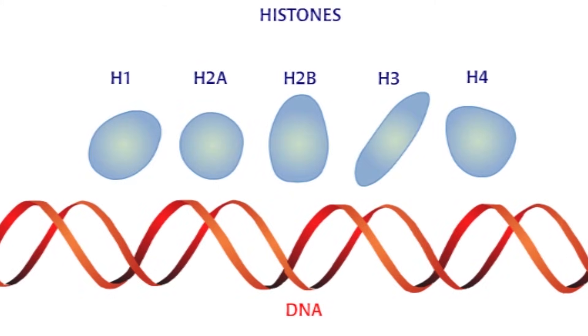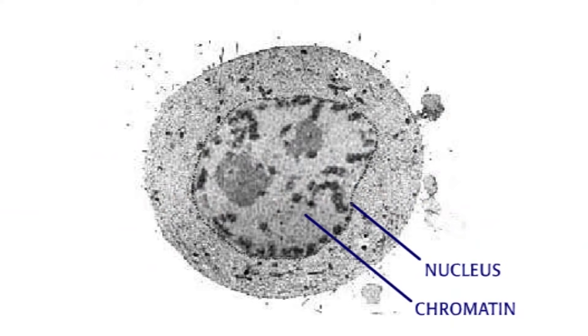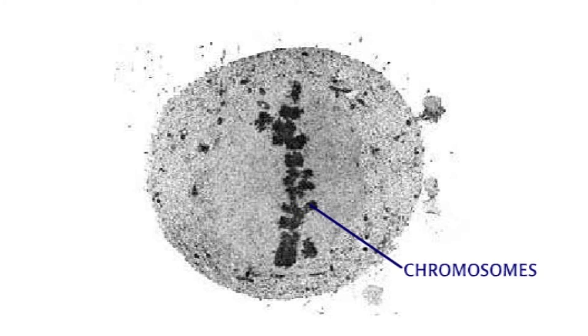Histones bind to DNA to form chromatin in the nucleus of cells. In non-dividing cells, chromatin is dispersed throughout the nucleus. During prophase of cell division, chromatin condenses into visible structures called chromosomes.